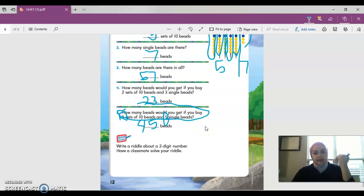My question would be, since I'm not going to write it down, how many beads would you get if you buy seven sets of 10 beads and three single beads? If I have seven sets of 10 and three single, that's seven sets of tens and three singles. Remember, this is the ones place, this is the tens place. Then I have the number 73, so I actually have 73 beads.